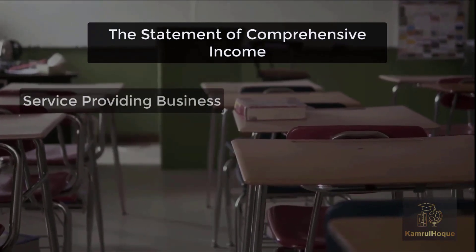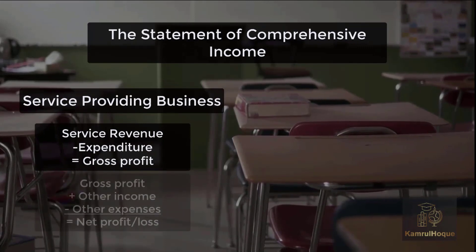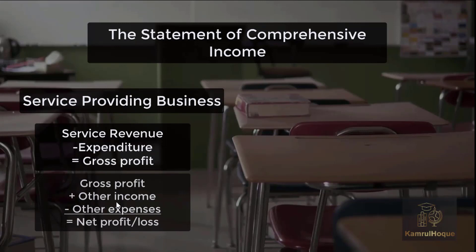For a service providing business, the main income is service revenue. In the comprehensive income statement, income and expenses are worked out together. For a service providing business, there is no gross profit — with service revenue directly, there are no intermediate deductions. If there is no such expense, with the direct service revenue we arrive at net profit and net loss.